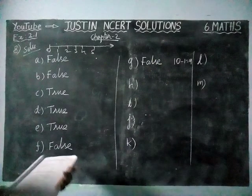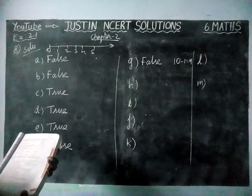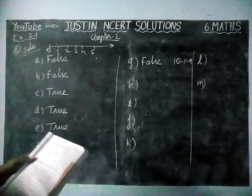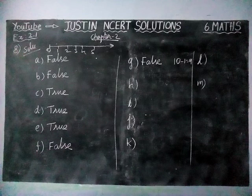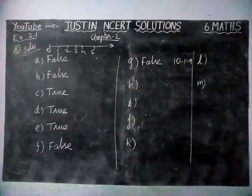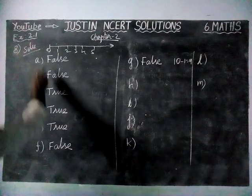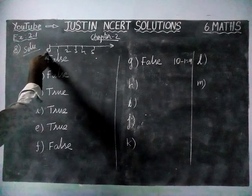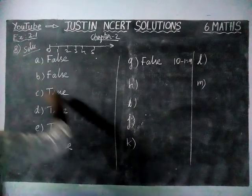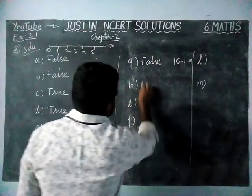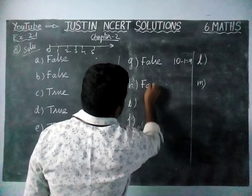Next, option H: '1 is the smallest whole number.' This is also wrong, because the smallest whole number is 0. So this statement is false.